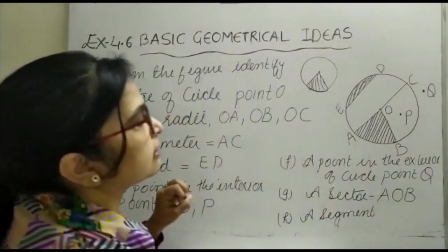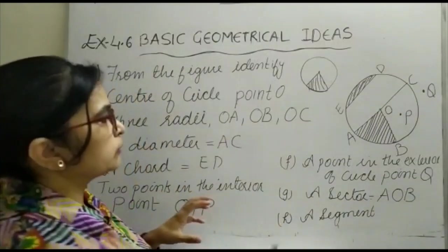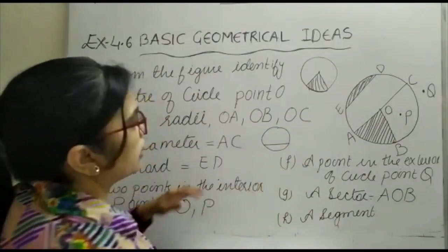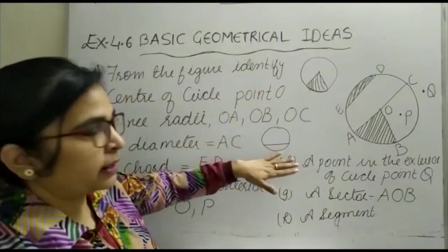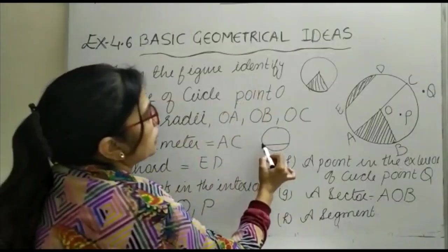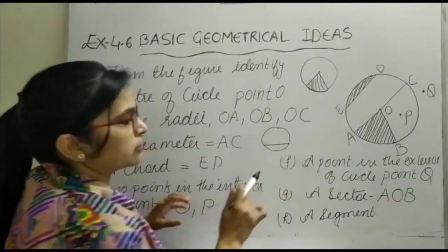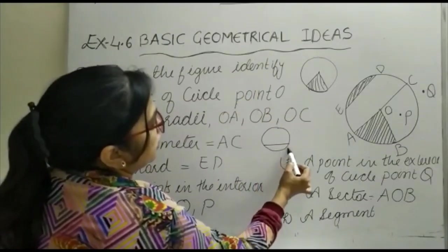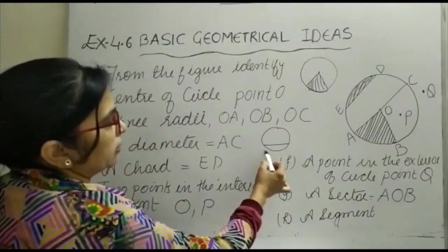The last thing is a segment. When you draw a chord in a circle, you get a major segment and a minor segment. Major segment is bounded by the chord and major arc. Minor segment is bounded by the chord and minor arc.